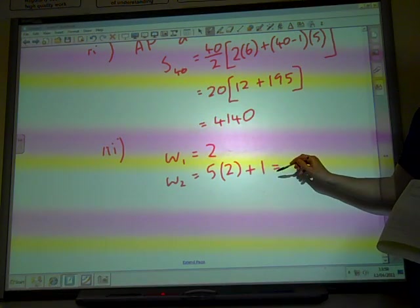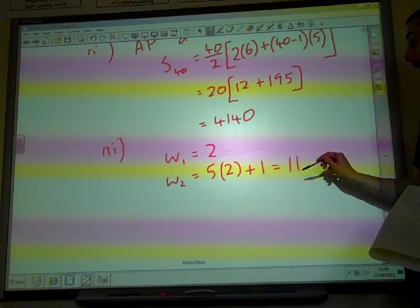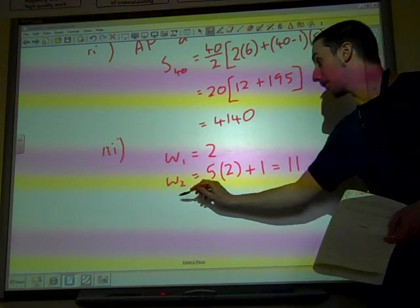W2 is 5 times the previous term plus 1. So it's 5 times the previous term plus 1. Which is looking pretty similar so far. That's 11. But then look what happens.